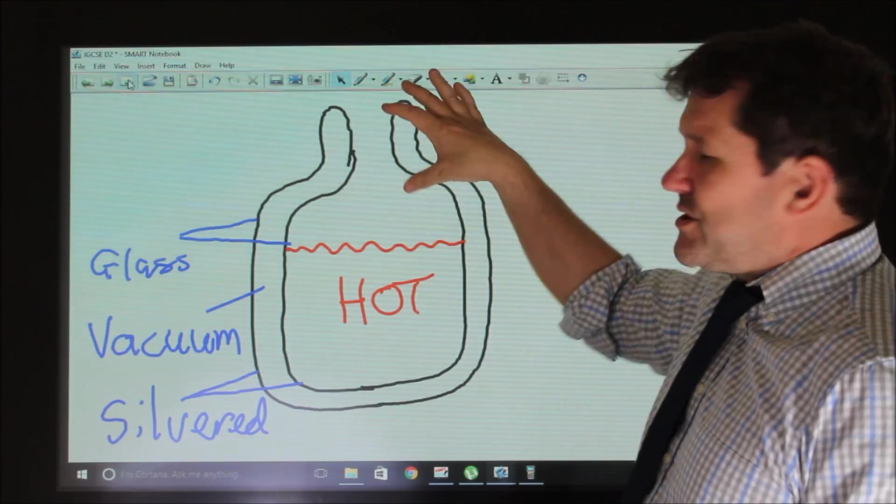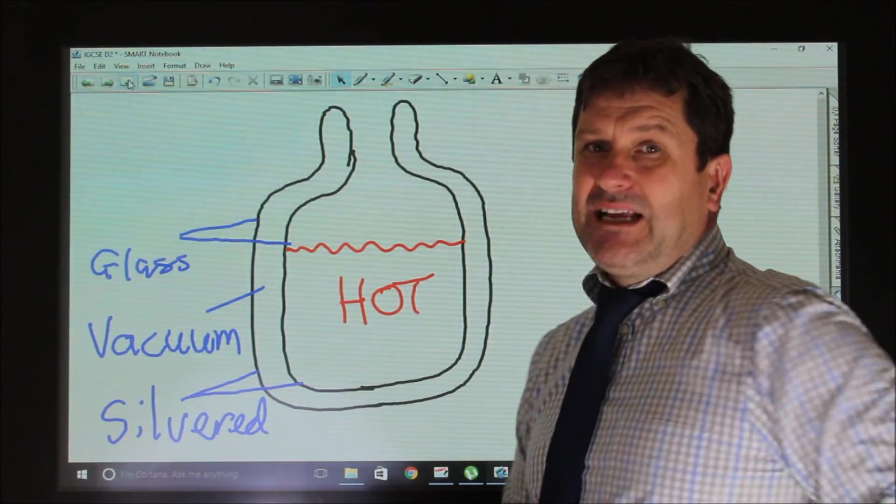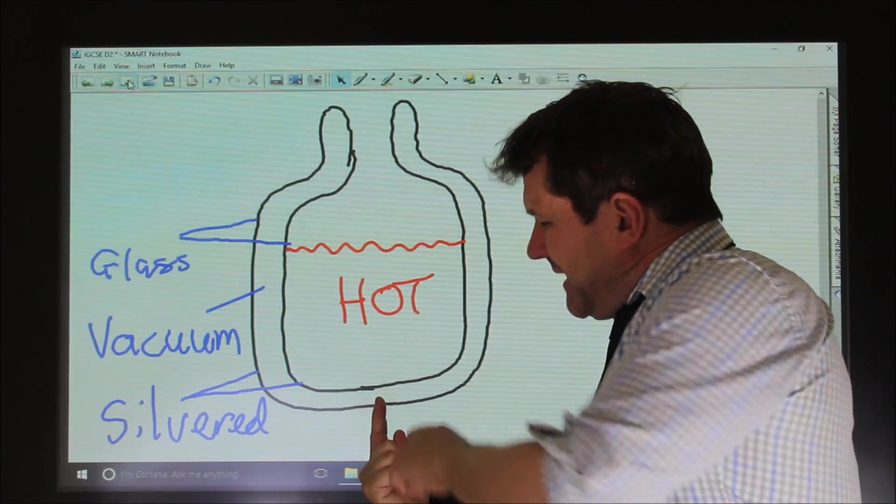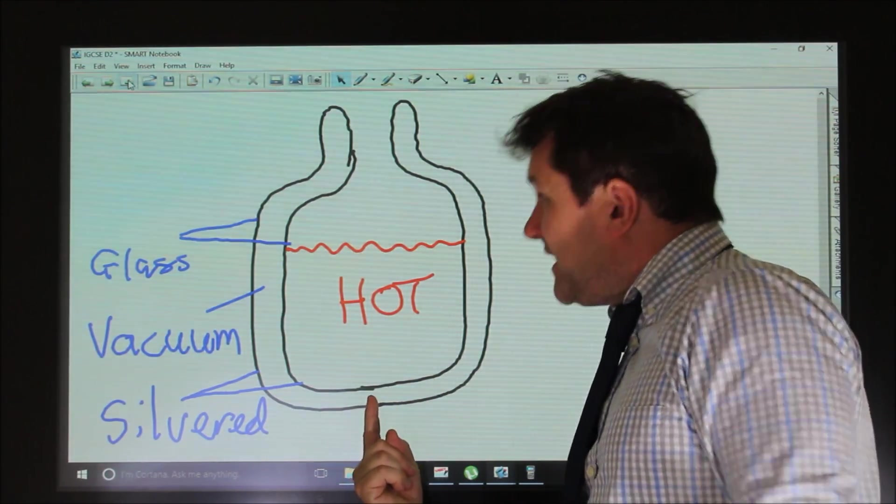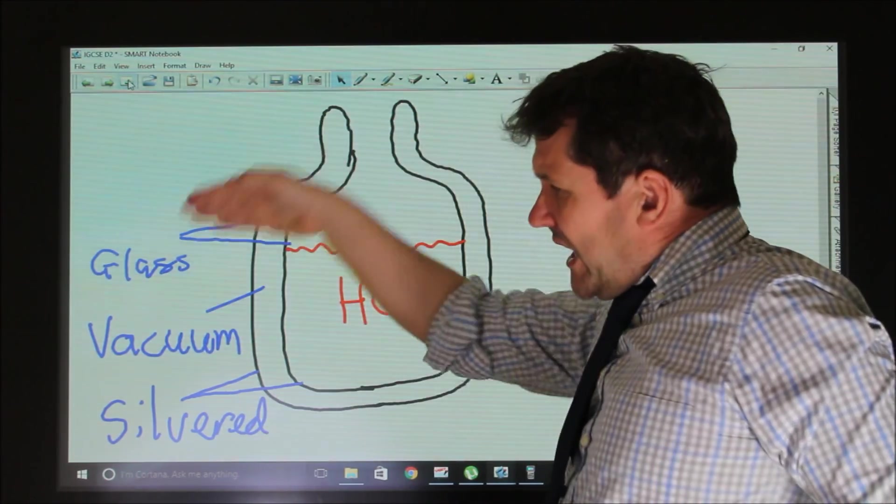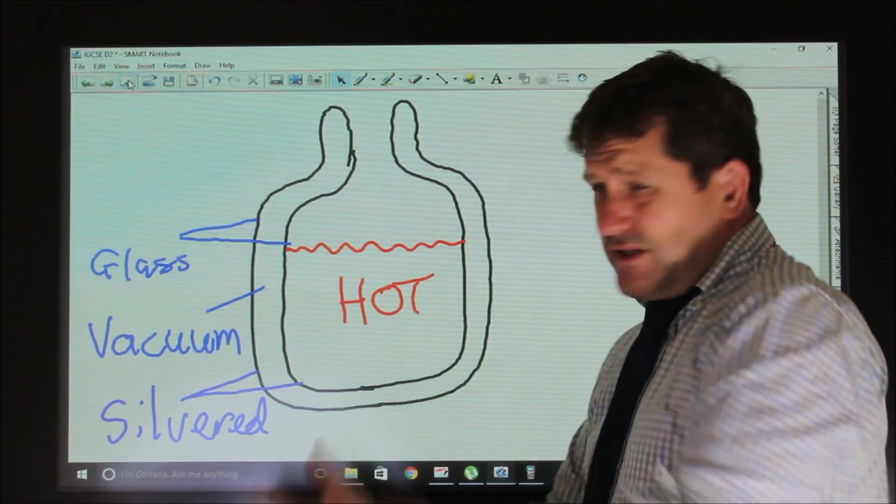We would have a cork stopper or plastic stopper as well, and the whole thing would be encased in plastic, but it would not touch the plastic. It would be supported by a tiny little point there and a tiny point here. But I want to look at the glass, the vacuum and the fact that the walls are silvered.